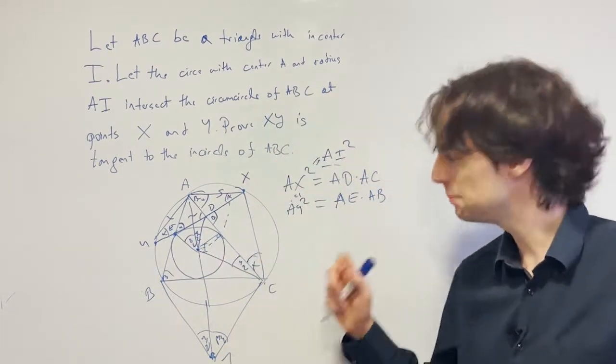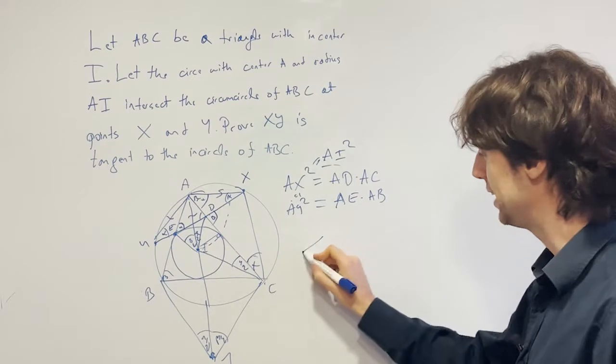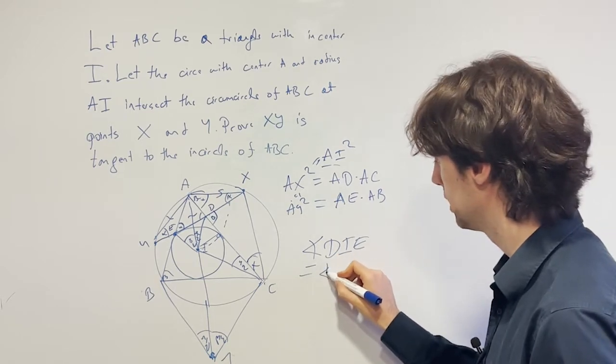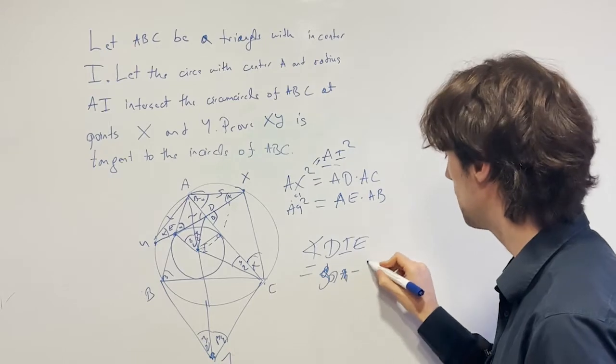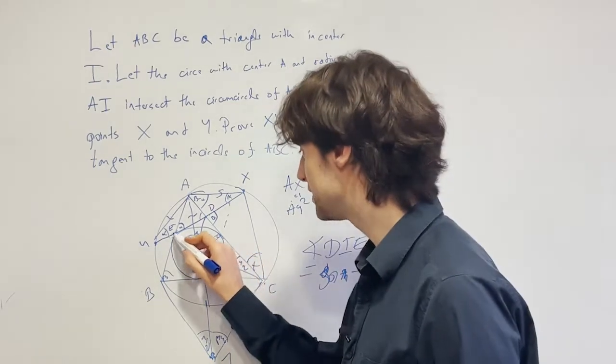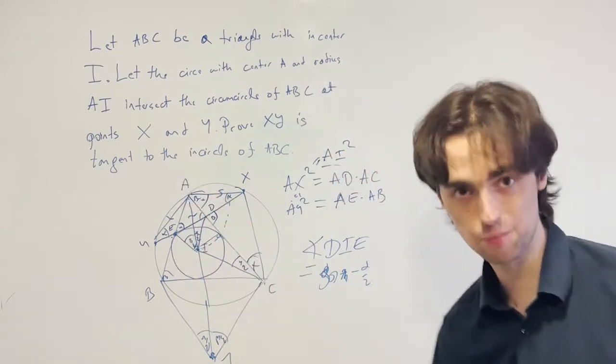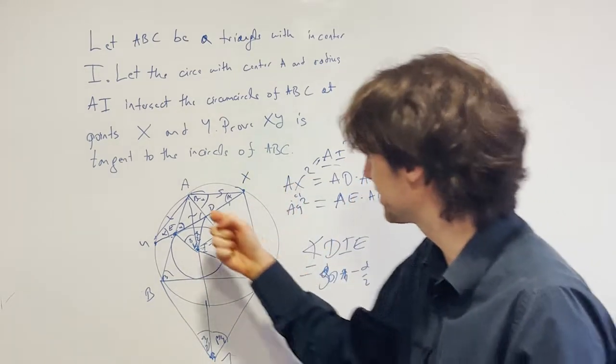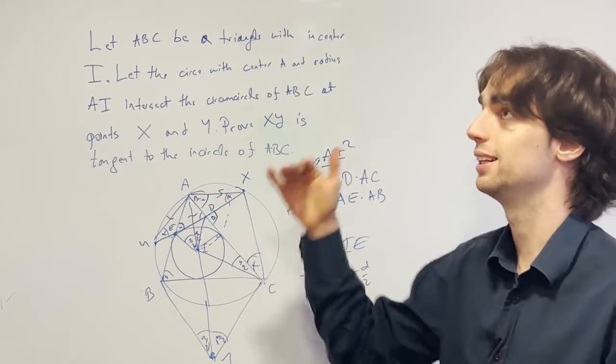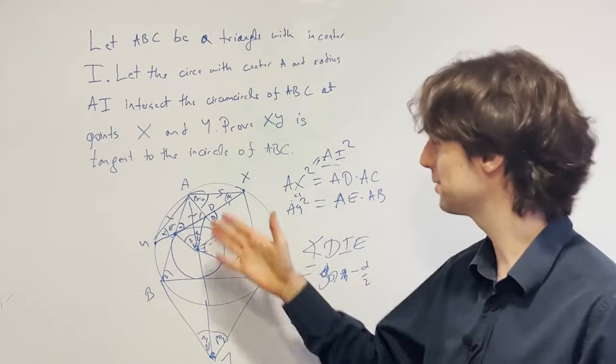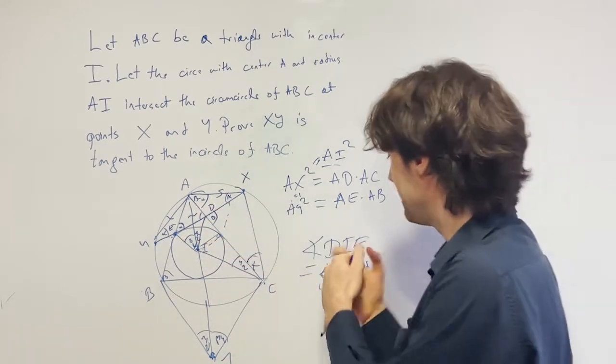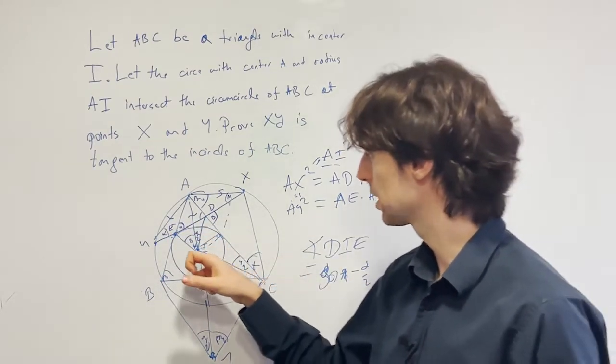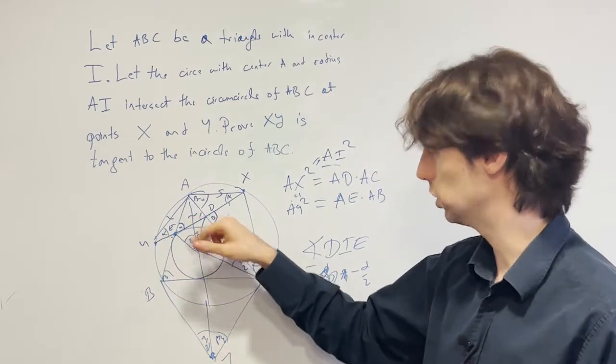Namely, what does it mean now that we have the angle? We have the angle DIE is equal to 90 minus alpha half. And this is on the angle bisector of EAD. And now what does this mean? This uniquely defines the excenter opposite A, the excircle. Yeah, the center of the excircle opposite A in the triangle ADE. It uniquely defines it, that this angle is on this side and 90 minus alpha half, and that it's on the angle bisector.